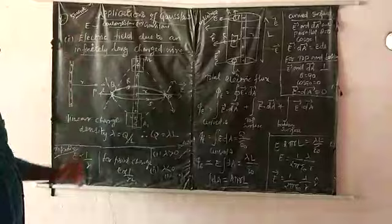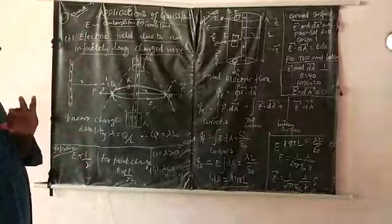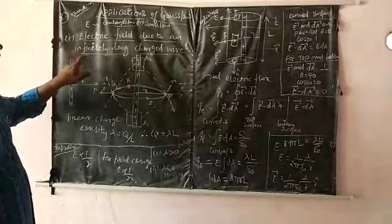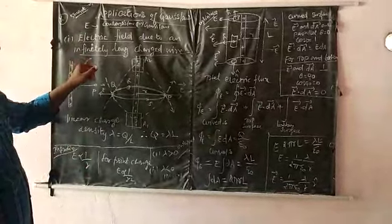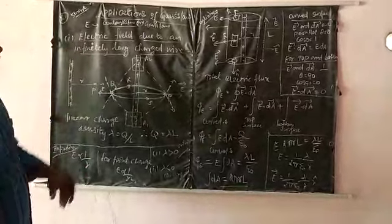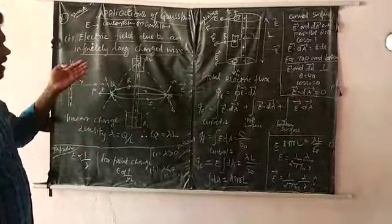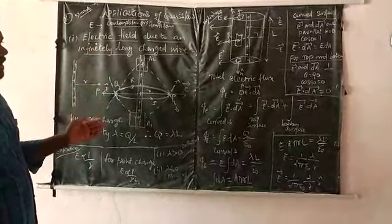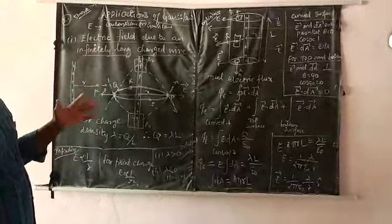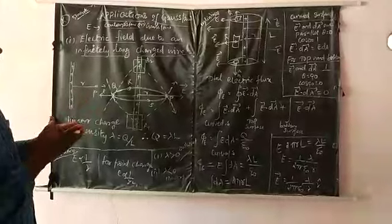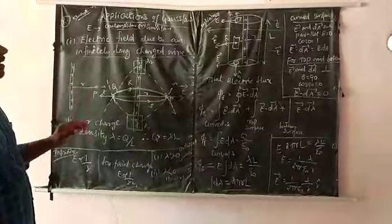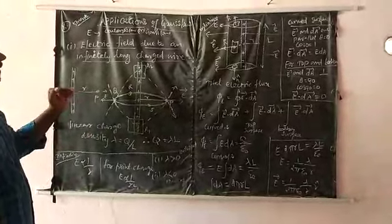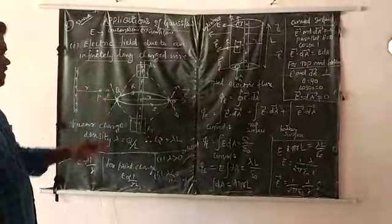There are three applications of Gauss law. The first one is the electric field due to an infinitely long charged wire. Another one is an infinitely long charged plane sheet, and the third is a spherical shell. These are the different applications of Gauss law to find the electric field.